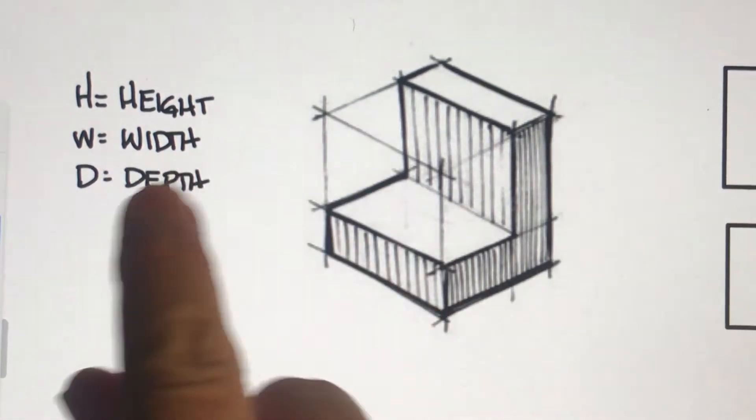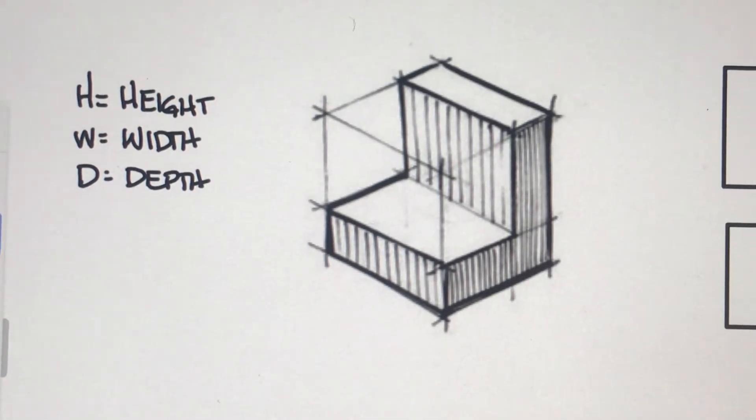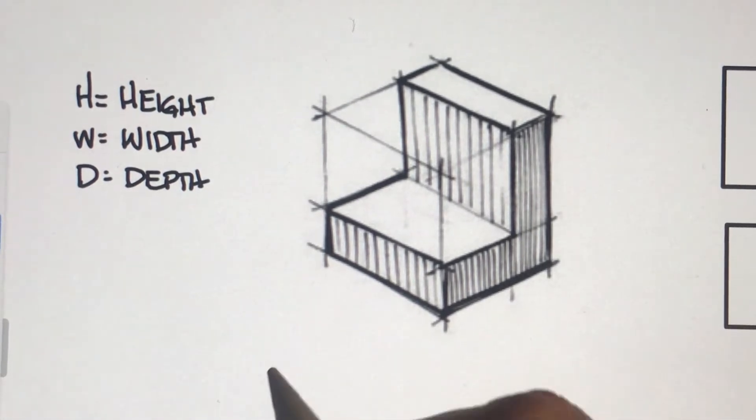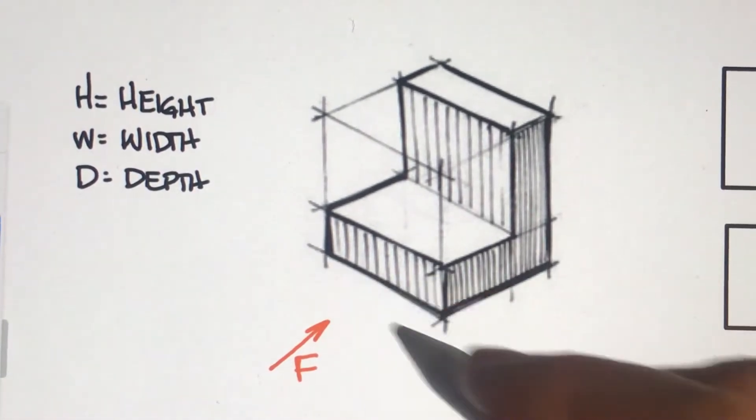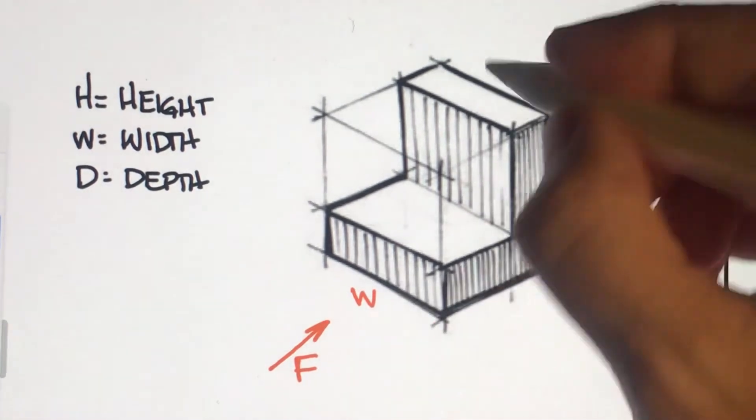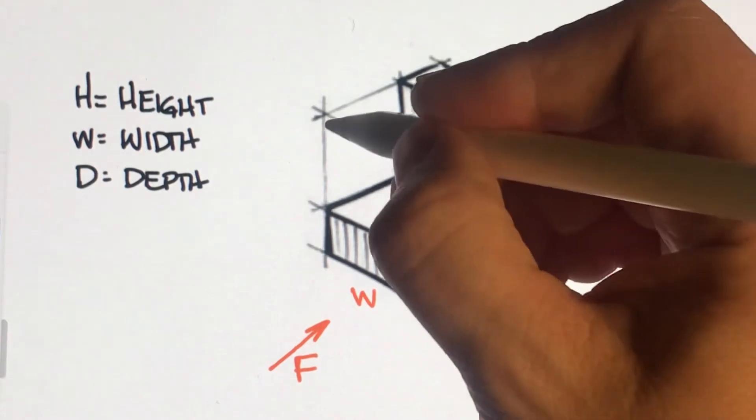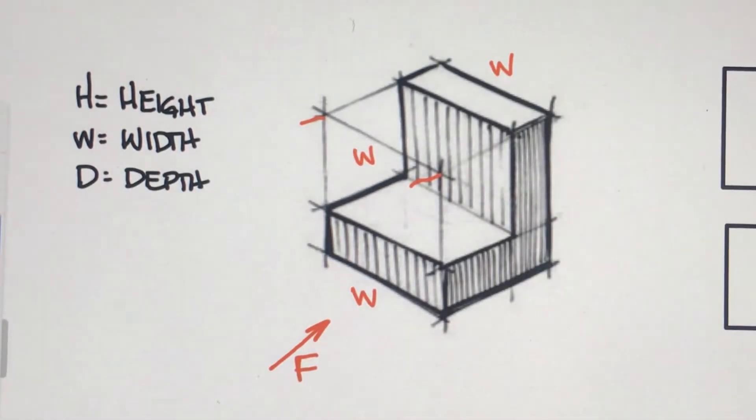So we need to figure out where the height and the width and the depth can be on the parts. When you're looking at a part, if this is the front, then all the way across is going to be the width. Sometimes it may be up here, you may see it on this corner, you might have a dimension that comes out and can show you the width here.